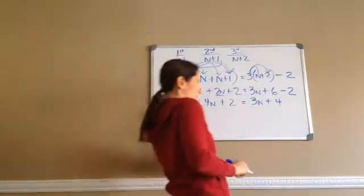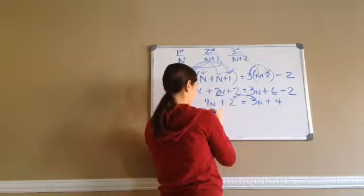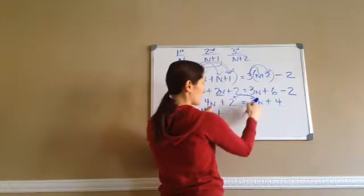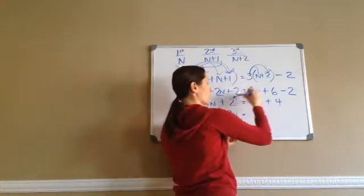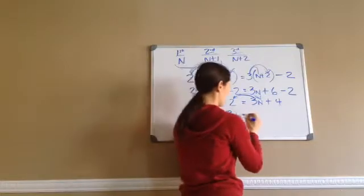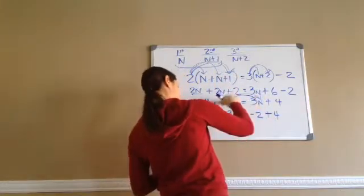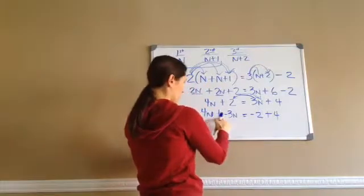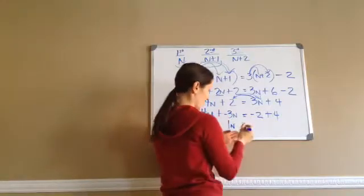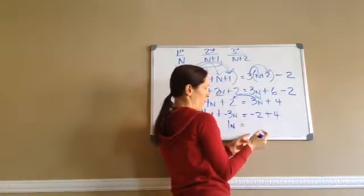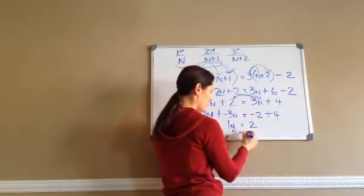Now I'm going to put the n's on one side and the numbers on the other. I'm going to bring this 3n over — it would be 4n, and this positive 3n will become negative 3n. Now let's take this 2 and bring it across — since it's positive, it's going to be negative 2, and I bring the positive 4 down. So 4n plus negative 3n gives me 1n. And negative 2 plus 4 would be 2, because I subtract and take the sign of the largest number. So n equals 2.